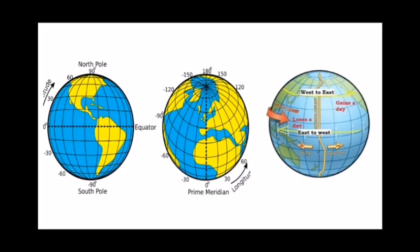Hello children, today we will begin with the seventh chapter in geography - the International Date Line. The International Date Line is an imaginary line on the earth's surface that runs from the North Pole to the South Pole. When one crosses it, the day and date changes. If you cross it traveling westwards, the day goes forward by one day and the date increases by one. If you cross it traveling eastward, one day and date is reduced. The IDL is very important for global interconnectivity and communication.